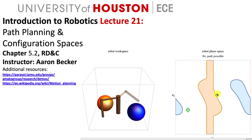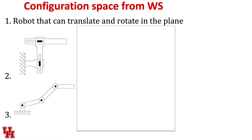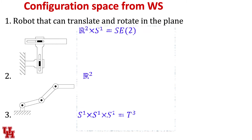Welcome to lecture 21. We're going to talk about path planning and configuration spaces. Let's start with some examples from the previous worksheet. The first one: we've got a robot that can translate and rotate in the plane. Its configuration space is going to be R² cross S¹, which is a unit circle, and R² cross S¹ is just Special Euclidean space of order two — rigid body translation and rotation in the plane.